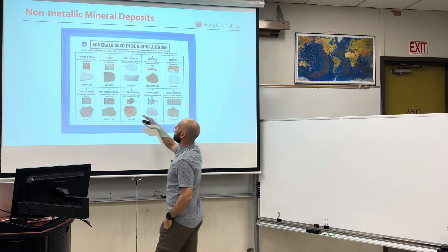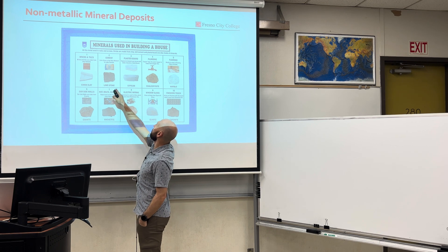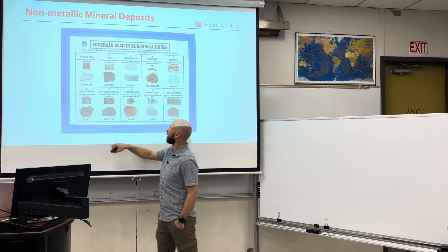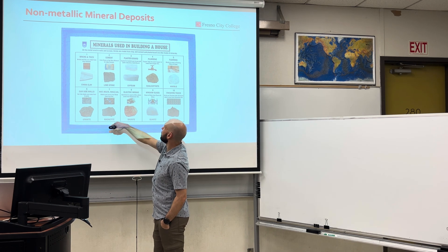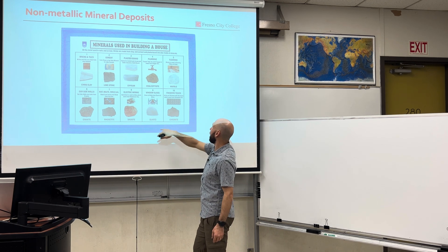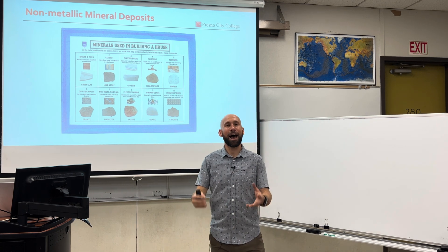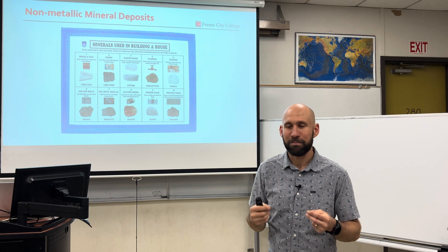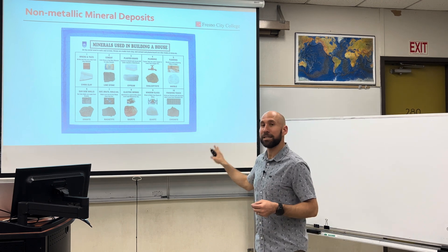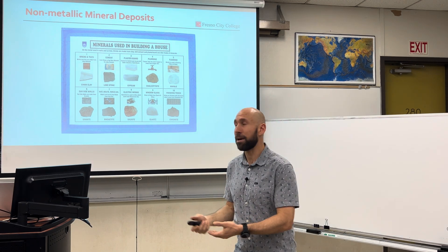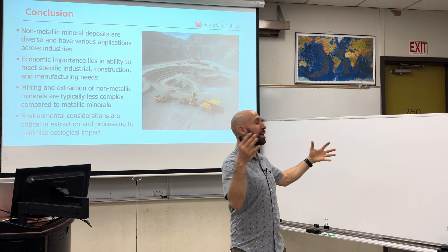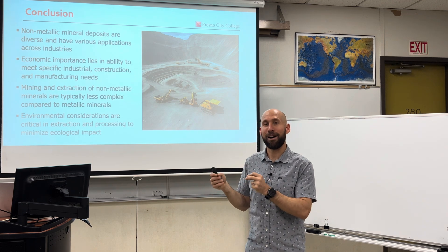Looking at a house: clay makes the bricks and tiles, limestone makes the cement, gypsum makes the drywall, chalcopyrite for the plumbing, marble for the flooring, granite for the walls, magnetite for the nuts and bolts, bauxite for the wiring, quartz for the glass, and chromite for the finishing touches. Your house is built on mineral resources — both metallic and non-metallic. The wiring is metallic for sure, but not to be discounted are minerals that do not contain metals, our non-metallic mineral resources, in everything that we do, harvested from the earth through the process of mining.